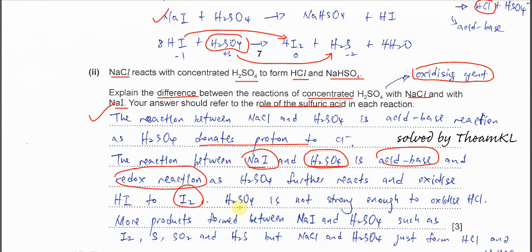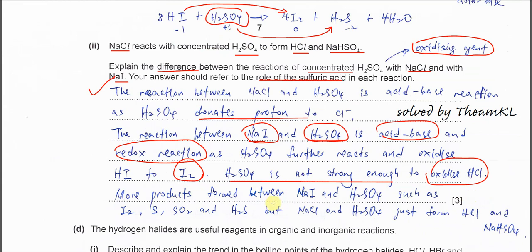For sodium iodide with H2SO4, it's the acid-base reaction and a redox reaction. Because the H2SO4 further reacts and oxidizes the HI to iodine. So why can't the H2SO4 oxidize the sodium chloride? Because H2SO4 is not strong enough to oxidize HCl. Very hard to break this HCl bond. And more products form between the NaI with H2SO4. It has iodine, sulfur, SO2, H2S. But for NaCl with H2SO4, it just forms these two. That's the difference between them.